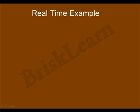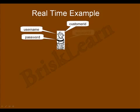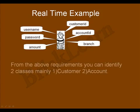Let us take a bank example and have a look from the customer perspective. Let us find the customer's requirements: customer ID, customer name, password, account ID, branch, and amount. These are the things required for a customer. From these requirements we can identify two classes mainly — one is the customer class and the other is the account class.